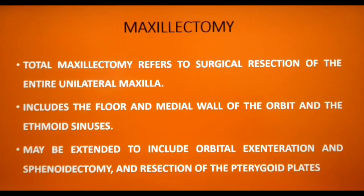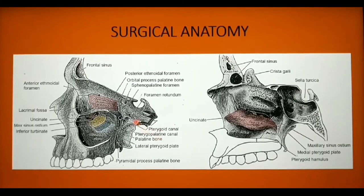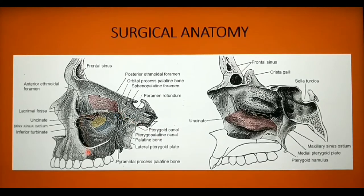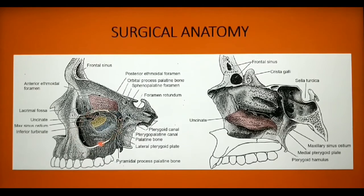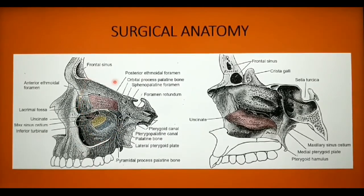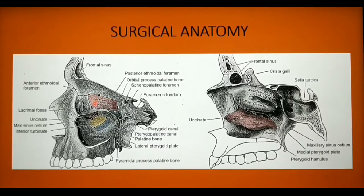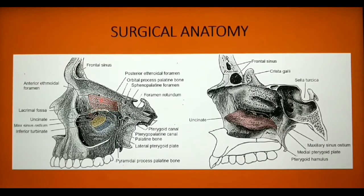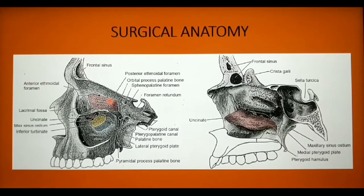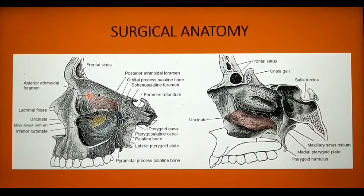We shall look at certain significant structures and landmarks relevant to total maxillectomy. The figure on the left is the lateral view of the maxilla, where a window cut is made to access the interior of the maxillary sinus. From this view you can identify the fronto-ethmoidal suture line, which is above the lamina papyracea. Along the fronto-ethmoidal suture line, the anterior and posterior ethmoidal foramina are located. This line corresponds to the level of the floor of the anterior cranial fossa.